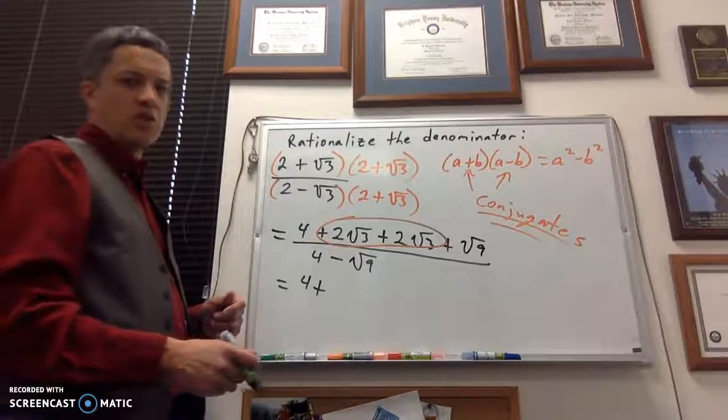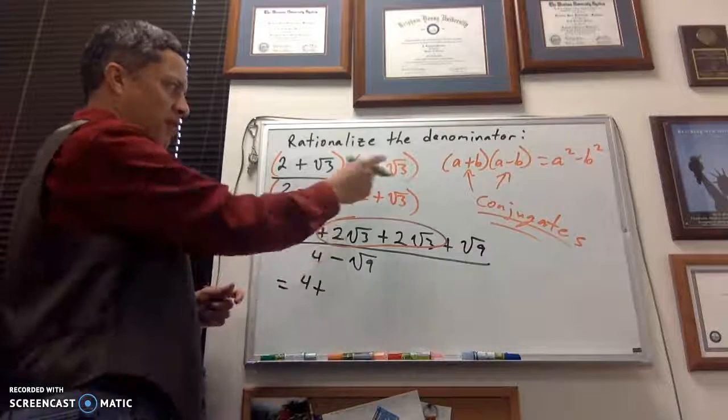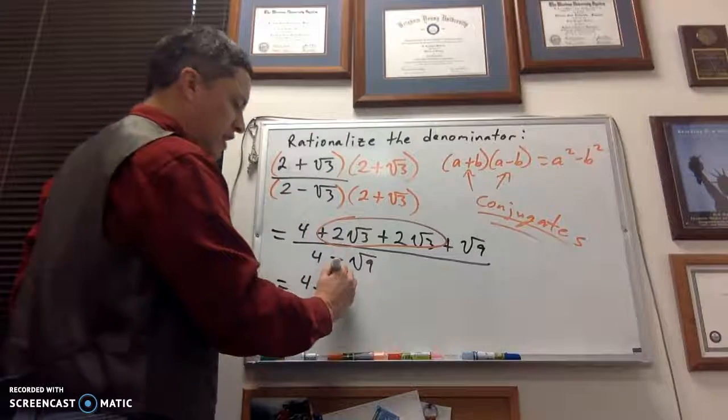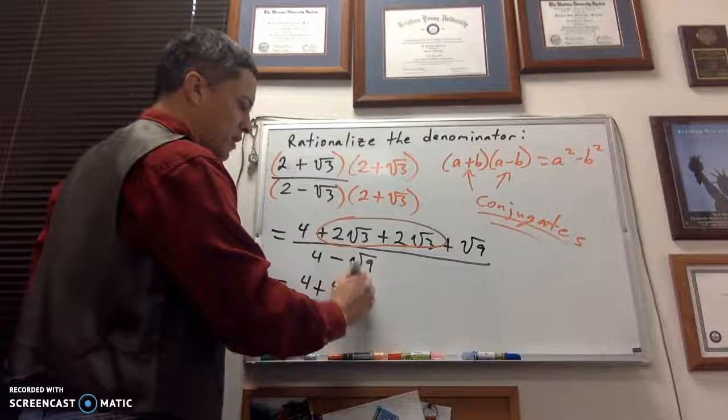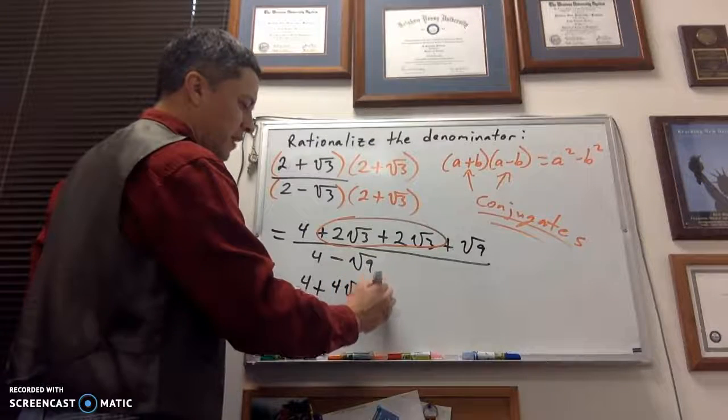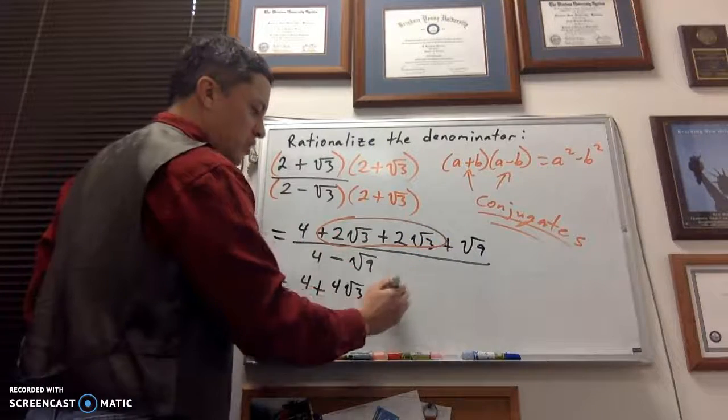By the way, if you know the perfect square trinomial formula, this numerator will have moved a lot faster. You'll get there in a bigger hurry, but if you don't know it, that's not a big deal.